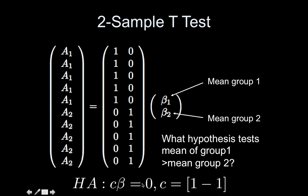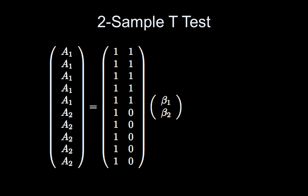This next model is equivalent — it fits the data exactly the same and the same hypotheses can be tested — but the parameterization is different. Be careful: many people when first learning this model, myself included, want to conclude that beta two corresponds to the mean for group one because it's an indicator variable, but it's not. For indicators to correspond directly to means, each row must have exactly one '1' and no other numbers. That isn't the case here, so we cannot jump to that conclusion.